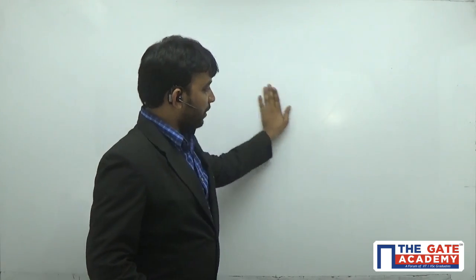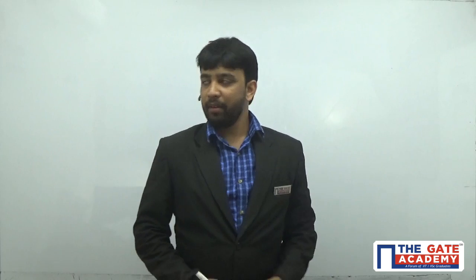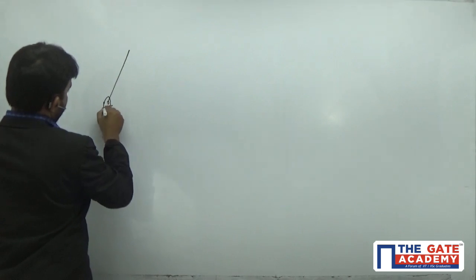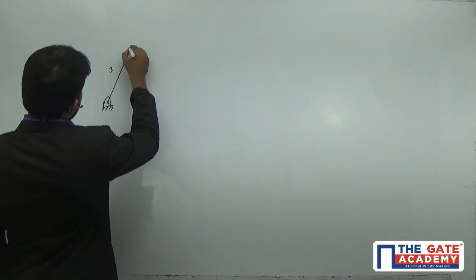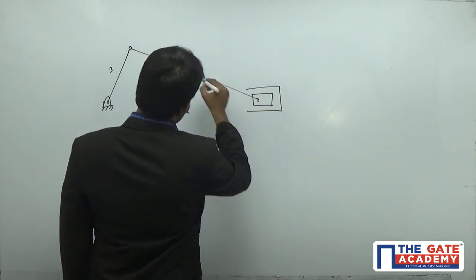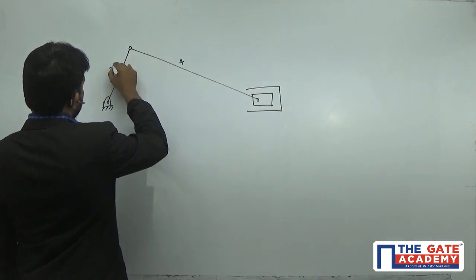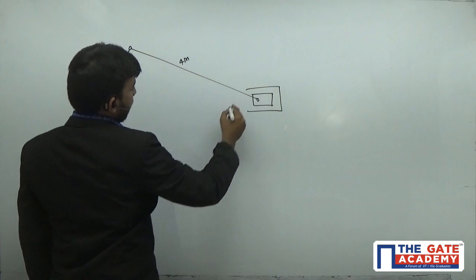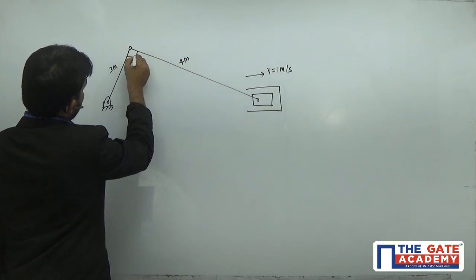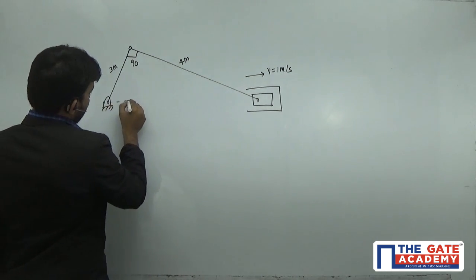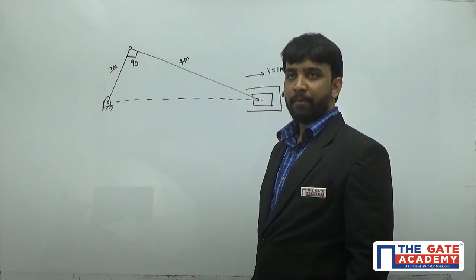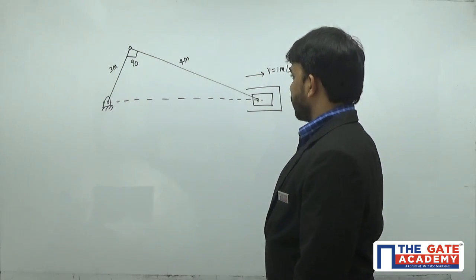This is a simple kinematics problem, completely based on geometry. Looking at the slider-crank mechanism: the length of the crank is 3 meters, the connecting rod is 4 meters, and the velocity of the slider is 1 meter per second. The angle between crank and connecting rod is 90 degrees. It is an inline engine, meaning the cylinder center line and the crank axis are both inline and they reciprocate in the same plane.